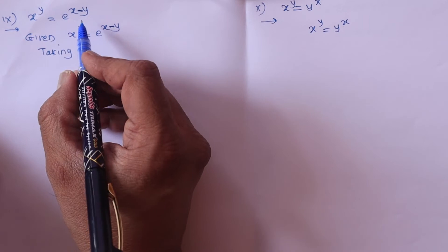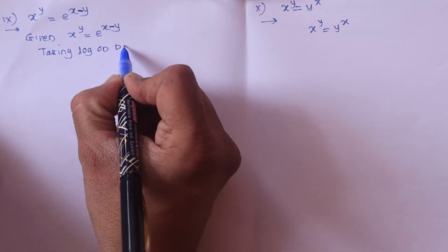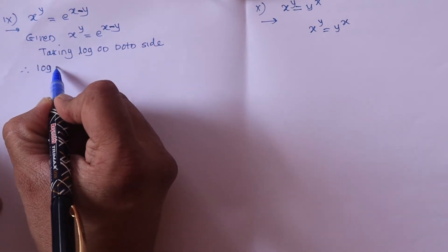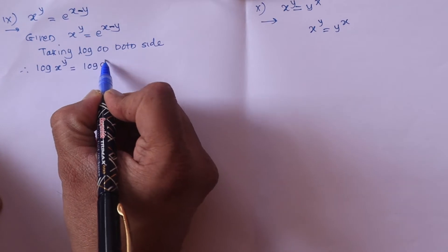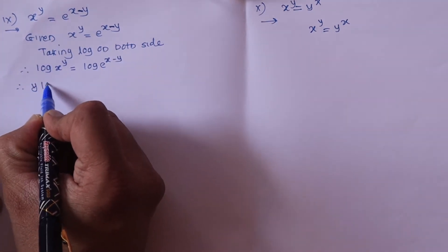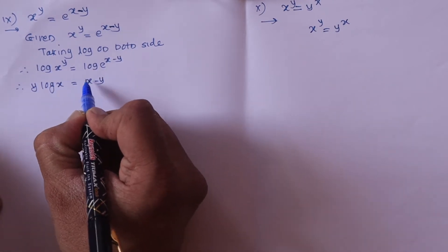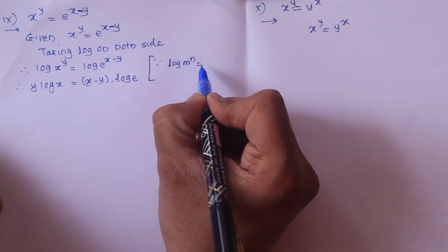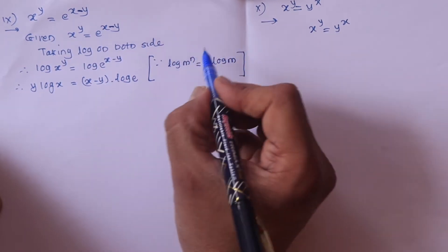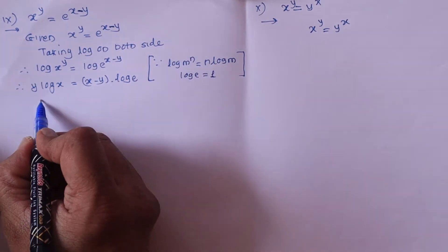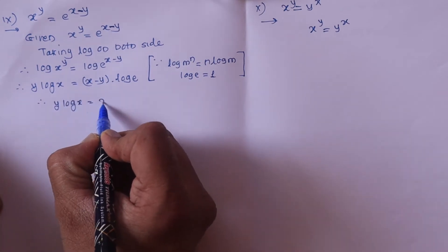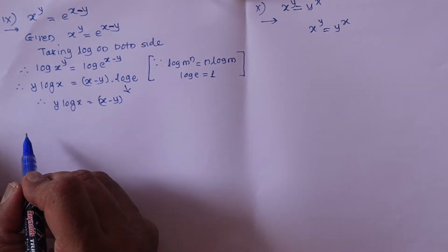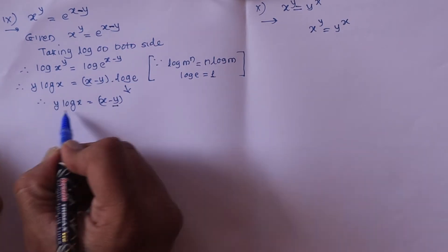Taking the logarithm on both sides: log of x raised to y becomes y log x, and log of e raised to (x minus y) becomes x minus y times log e. We use the rule log m raised to n equals n log m. Since log e equals 1, it becomes y log x = x minus y.